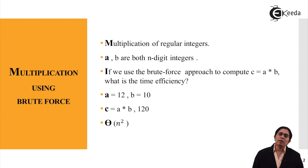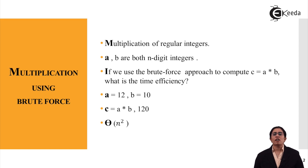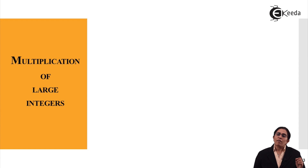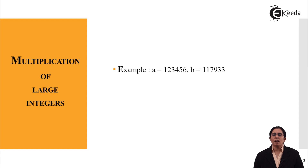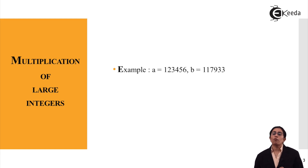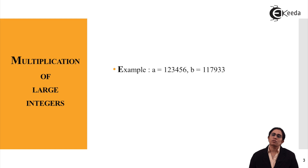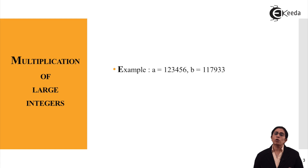Now if I have numbers bigger than 2, with the size of my integer it is going to lapse many fold if the size of my integer is very large. So what do I do? When I am multiplying large integers, for example I have taken the number a = 123456 and b = 117933. This is just a simple number which has been taken. So what do I do next?